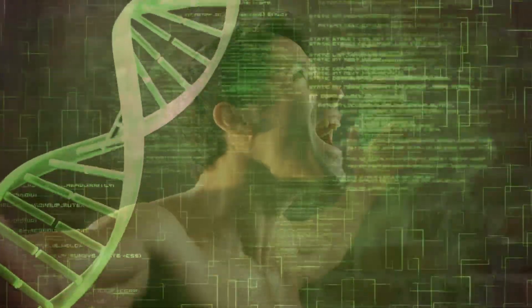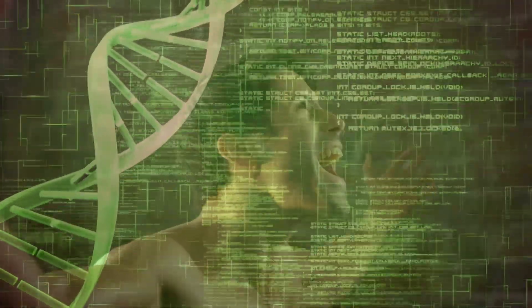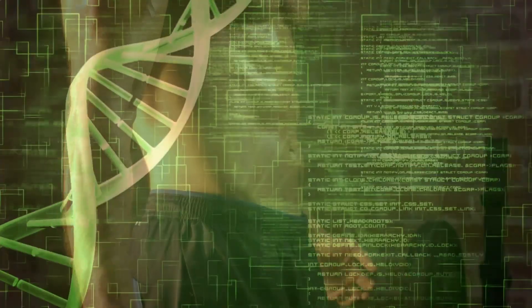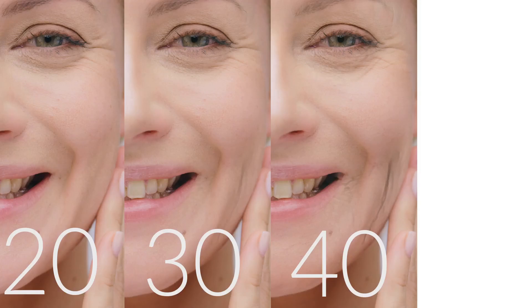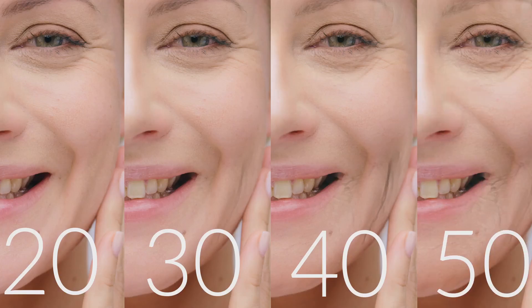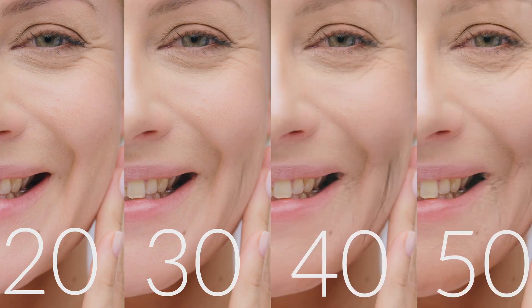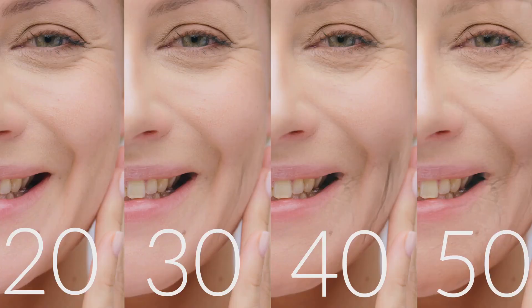By silencing these guardians, the cancer grows unchecked. At the same time, it can remove off switches from oncogenes, genes that promote growth, and put them into overdrive. Aging itself is also deeply tied to our epigenome. As we get older, our epigenetic patterns start to drift. The system gets noisy. Genes that should be off might flicker on, and genes that should be on might dim. This epigenetic drift is now seen as one of the hallmarks of aging, contributing to the decline of our cells and our vulnerability to age-related diseases.